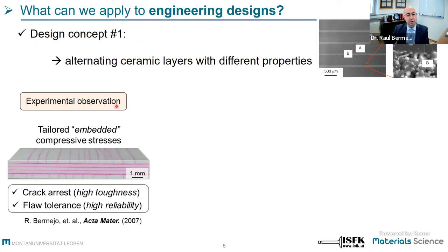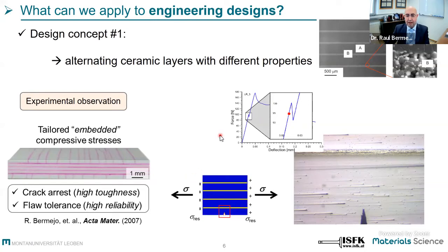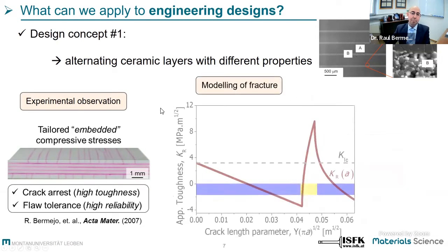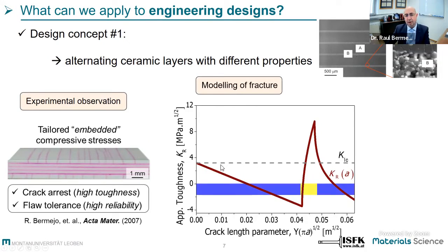Going directly to experimental observations: using the first approach, if you combine ceramic layers with different thermo-elastic properties, you can induce compressive residual stresses in the internal layers which act to arrest the propagation of surface cracks, as seen here in this thermal shock multi-layer alumina-based ceramics. I have a small video to illustrate how this strategy is also effective under bending loading. You can see a notch, and when strained, a crack initiates at the notch and propagates through the first layer in a brittle manner, but due to the compressive layers the crack is arrested — what we call damage tolerant architectures.